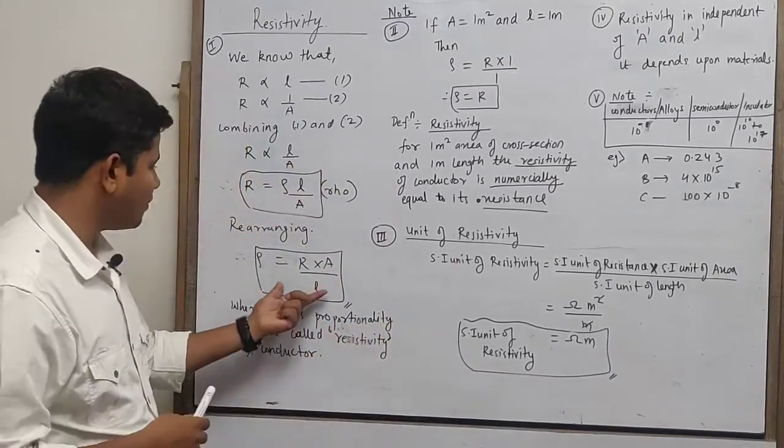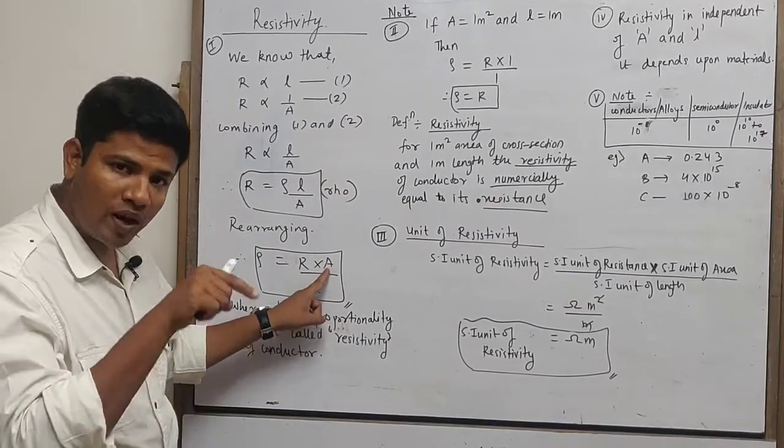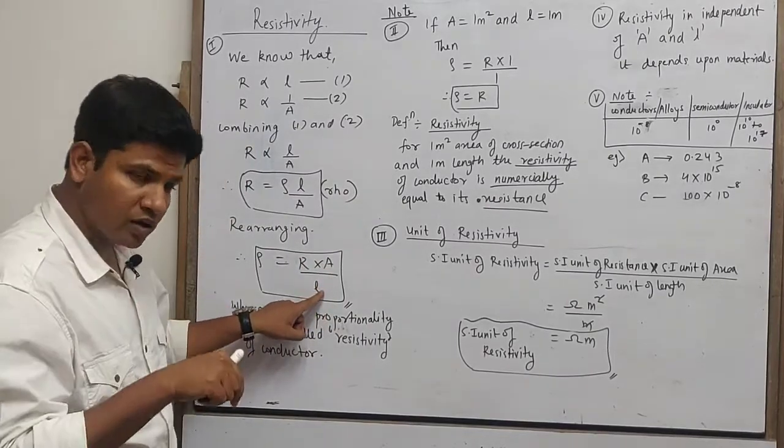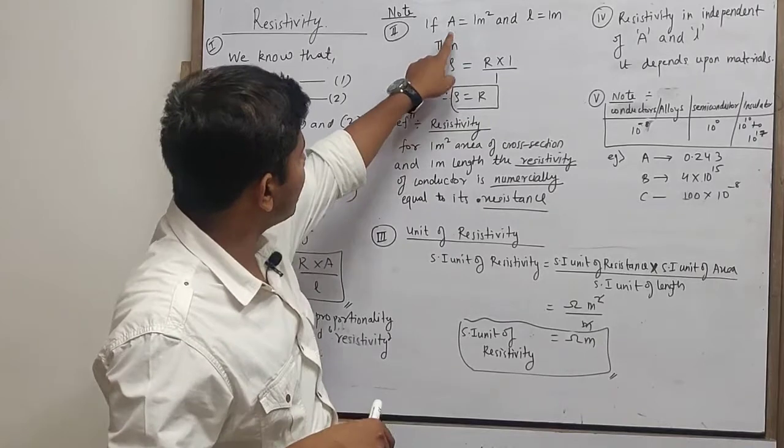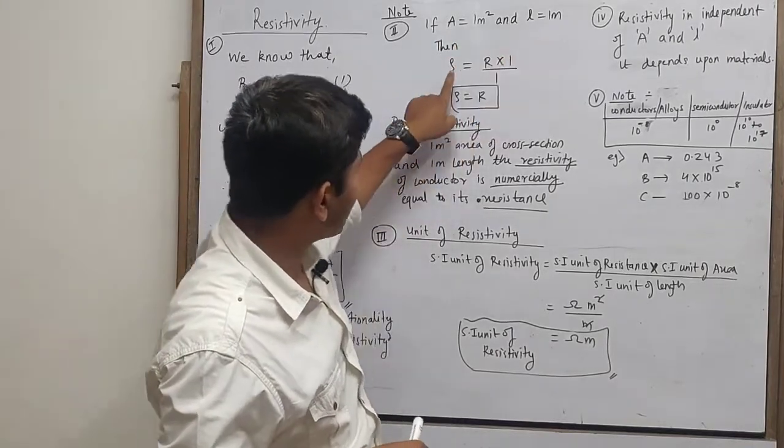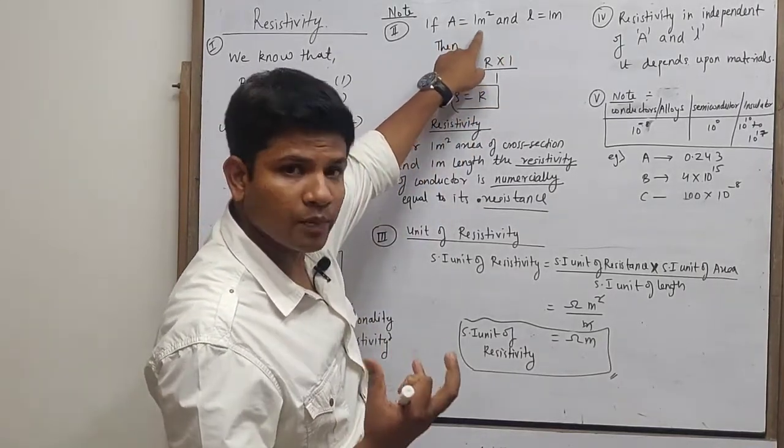So when I put values in this equation, area of cross section is 1, length is 1. For that case, if area is 1 meter square and length is 1 meter, if I take magnitude...